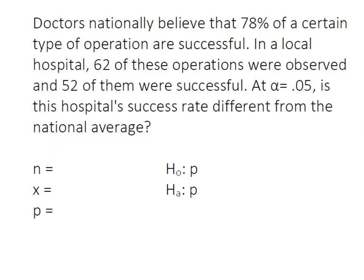Doctors nationally believe that 78% of a certain type of operation are successful. In a local hospital, 62 of these operations were observed and 52 of them were successful. At alpha equals 0.05, is this hospital's success rate different from the national average?